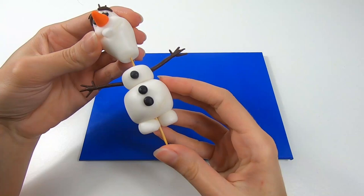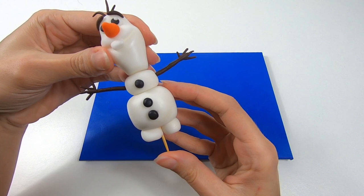The last thing we need to do is insert a dampened toothpick through the middle of Olaf and pop on his head.